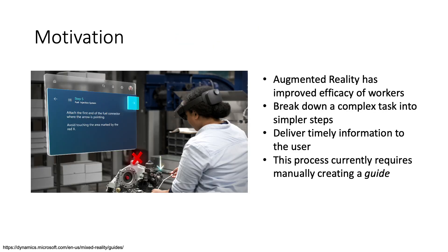Prior work has shown how AR and VR can improve the efficacy of workers. A simple example is that of AR guides that can help operators learn during the flow of work by providing holographic instructions. Operators see exactly what needs to be done and where, so that they can get the job done faster with fewer errors and greater skill retention. This relies on providing the workers with timely information and requires manually authoring a guide.